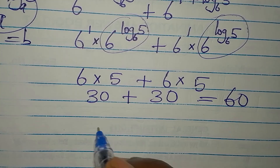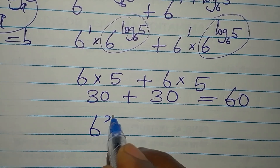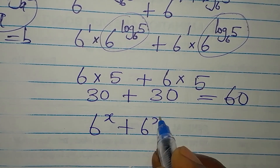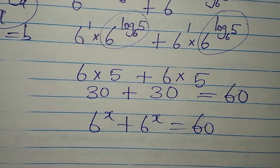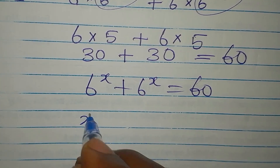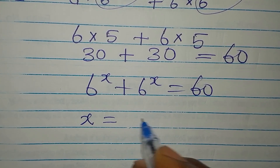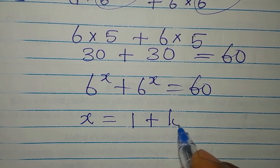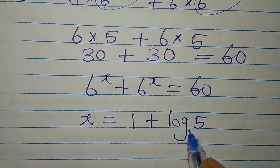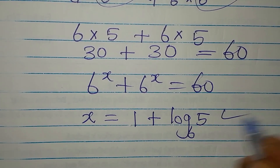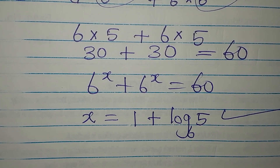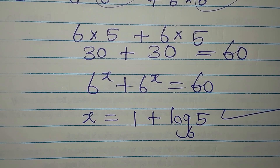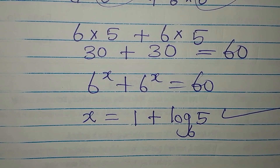The original equation is 6 to the power of x plus 6 to the power of x equals 60, and this confirms that x = 1 + log₆5 satisfies the given equation. Thank you for watching, and if you have not subscribed, subscribe so you can get more of my videos.